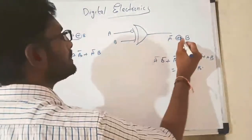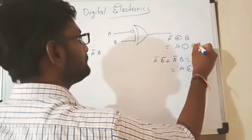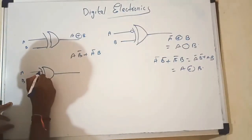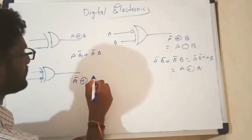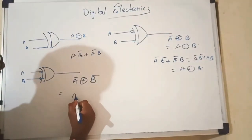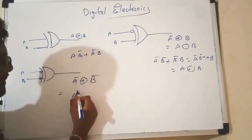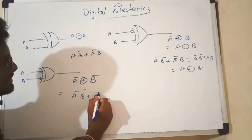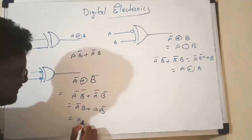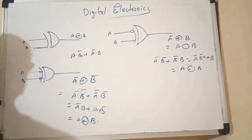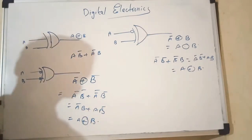This is an XOR gate. Similarly, if this is A and this is B, and two bubbles are added, then the resultant is A-bar XOR B-bar. Replace A by A-bar and B by B-bar: this gives A-bar·B-bar plus A-bar-bar·B, which equals A-bar·B plus A·B-bar. This is nothing but again an XOR gate. If two bubbles are added, the resultant is also XOR.